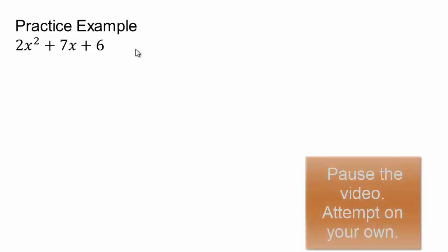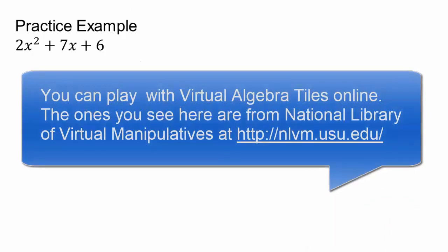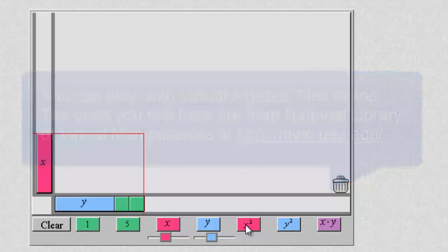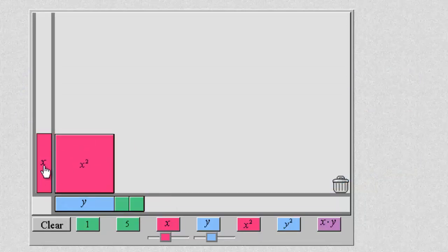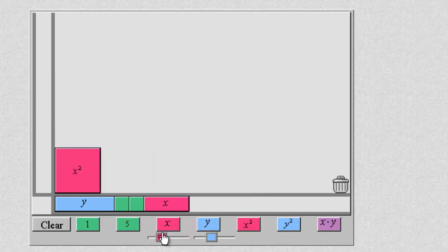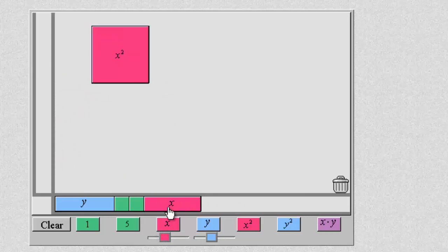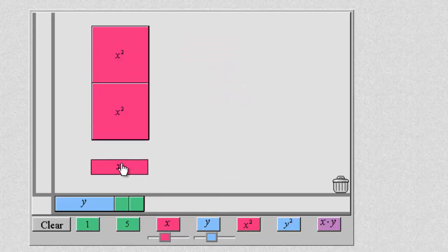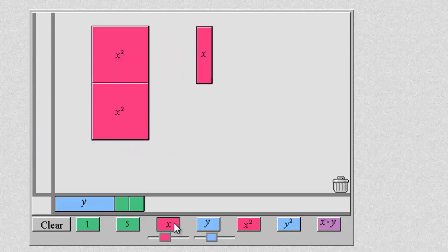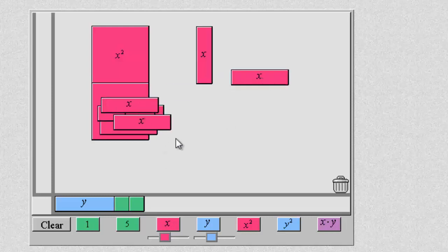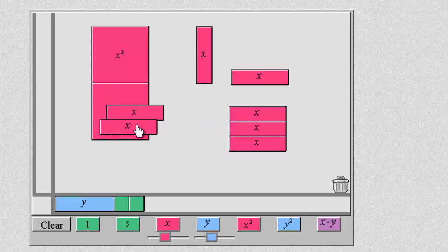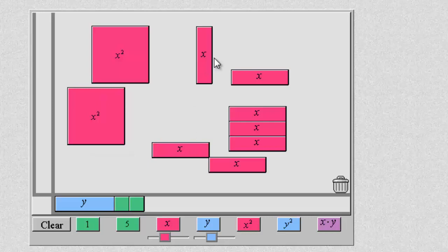Let's take a look at what virtual algebra tiles look like for 2x squared plus 7x plus 6. Pause the video and let's see an example. Here's my x squared — I'll use the slider to make it an appropriate size so 2x squared fits. Now here's 2x squared. We need 7 x's — turning them using the rotation button. So 1, 2, 3, 4, 5, 6, 7. We also need plus 6 unit squares.